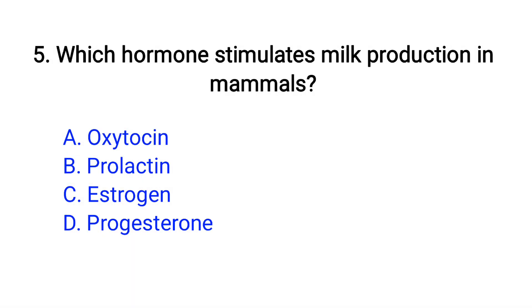Question number 5. Which hormone stimulates milk production in mammals? Option A: Oxytocin, B: Prolactin, C: Estrogen, D: Progesterone. The right answer is option B, Prolactin.